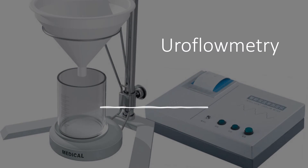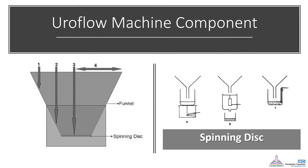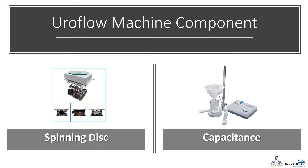We will start with uroflowmetry, a really important device in day-to-day practice. Measurement of the flow rate provides a visual image of the trends of a patient's urinary stream. The urine flow rate is measured in mL per second and is a principal investigation in male LUTS assessment. The machine is composed of a funnel which collects the urine, positioned on top of a spinning disc that rotates at different speeds according to the amount of urine reaching it in a specific time. These components are connected to a capacitance which transforms that movement into a graph, giving us the values of urine flow.